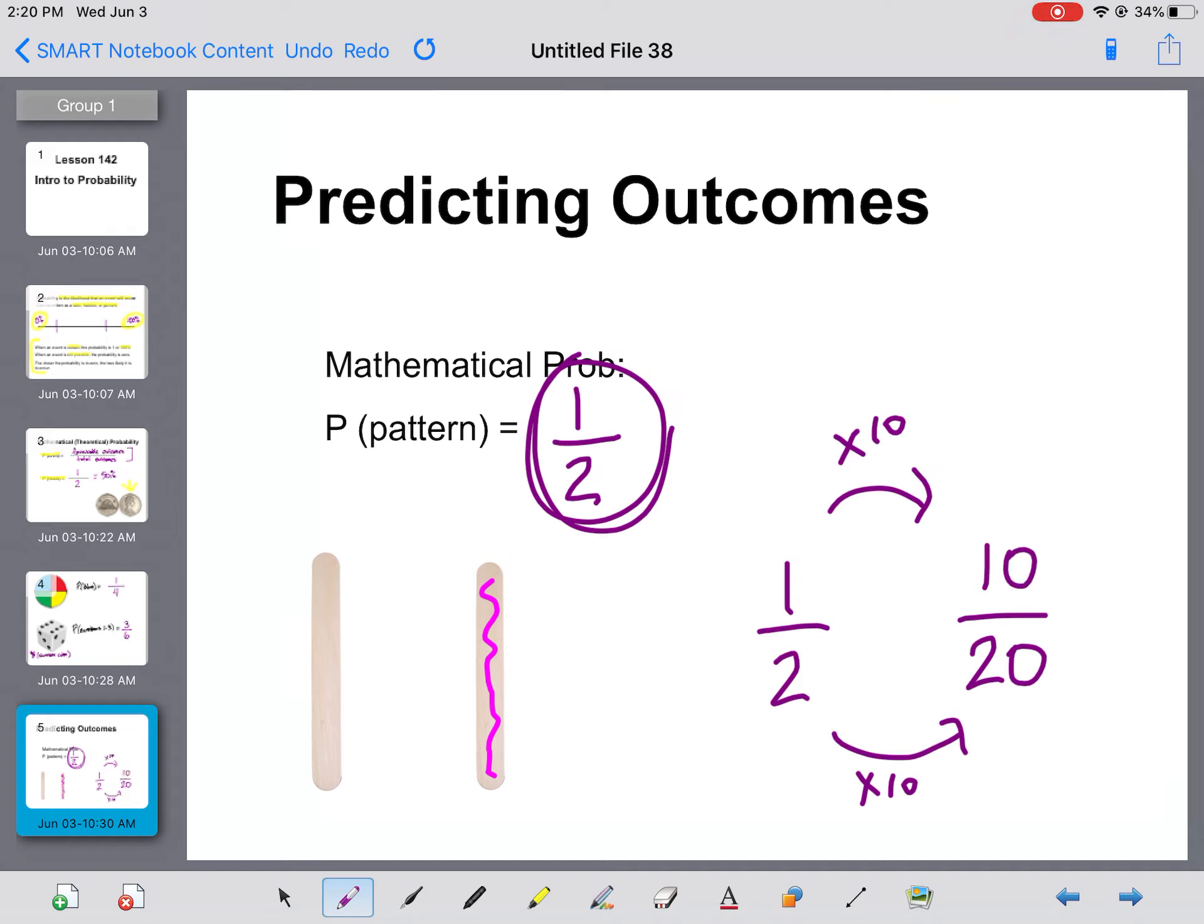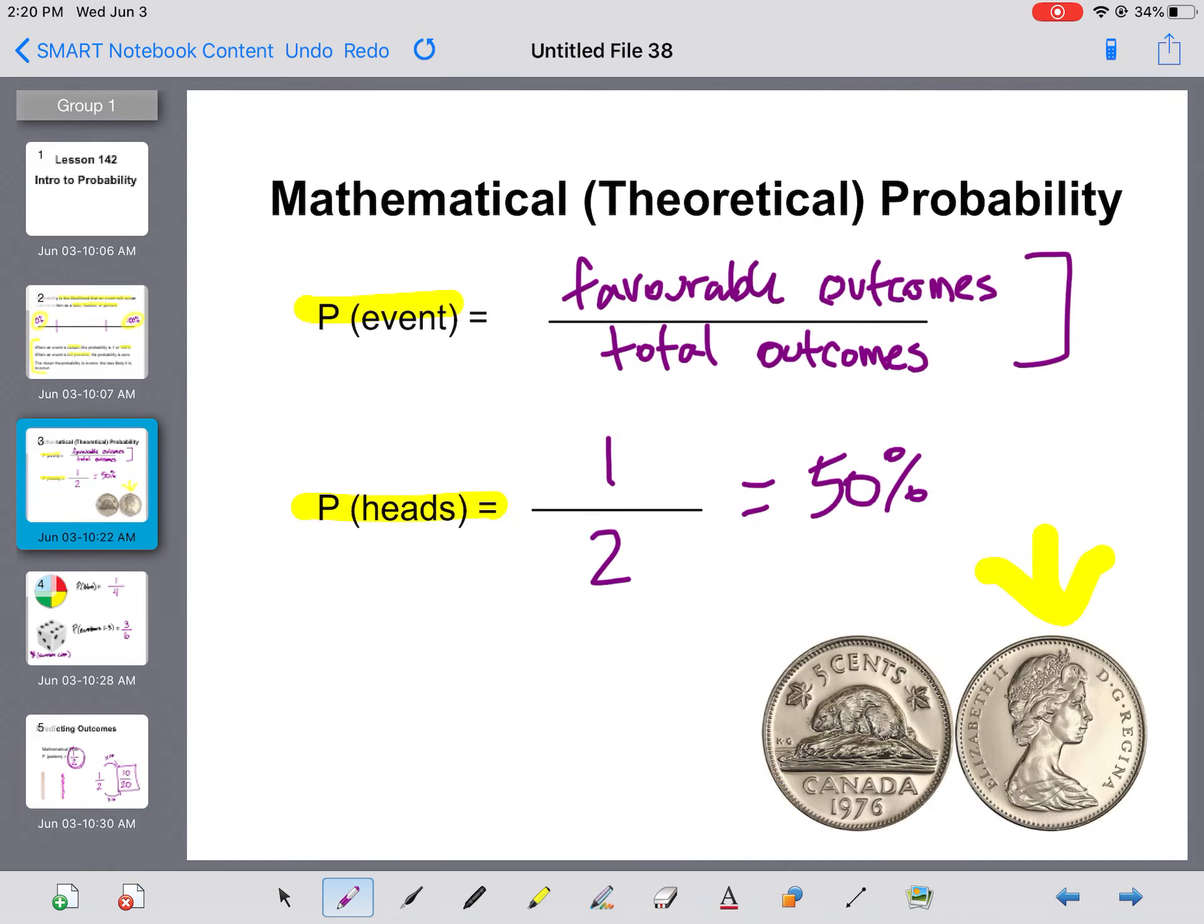We can predict that the pattern side will come up 10 times. Now it might not come up 10 times if you actually perform this experiment in real life, which you are going to do, either with a pattern stick if you have a popsicle stick and you can just color one side, or a coin will work just as well. But this is the—go back over here—the mathematical or theoretical probability.